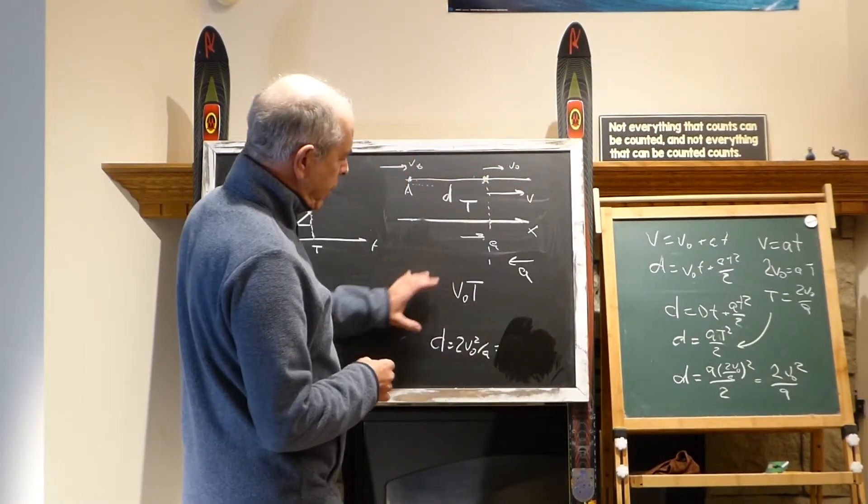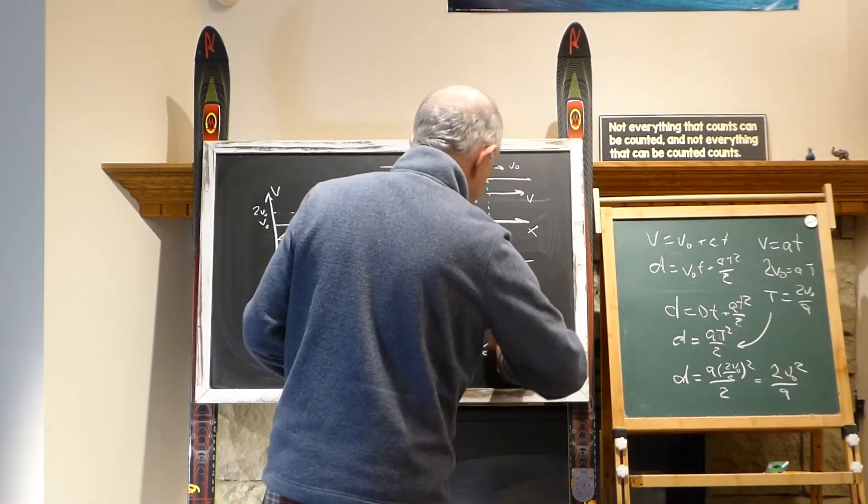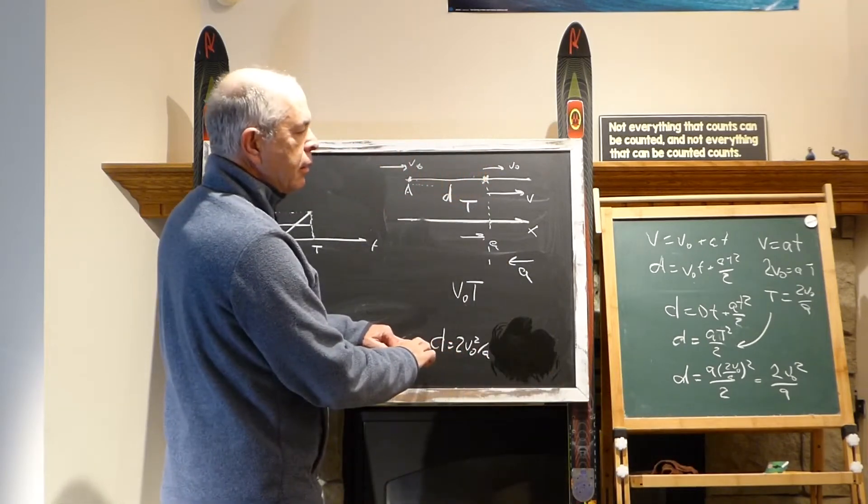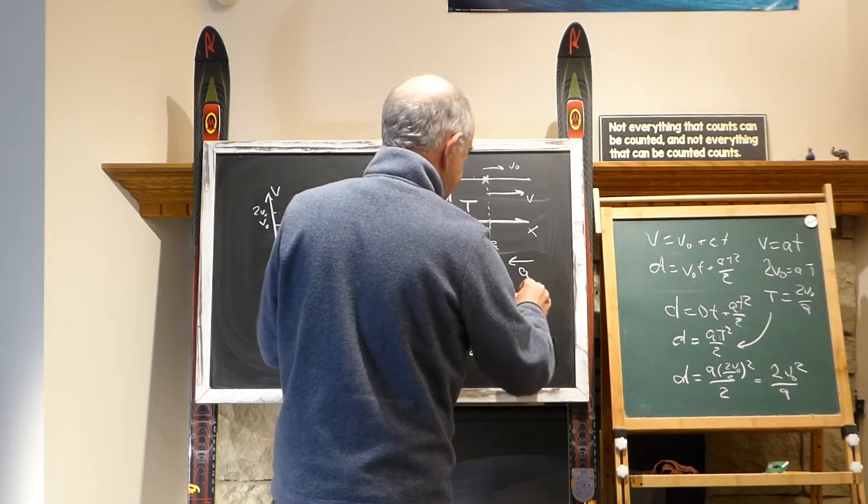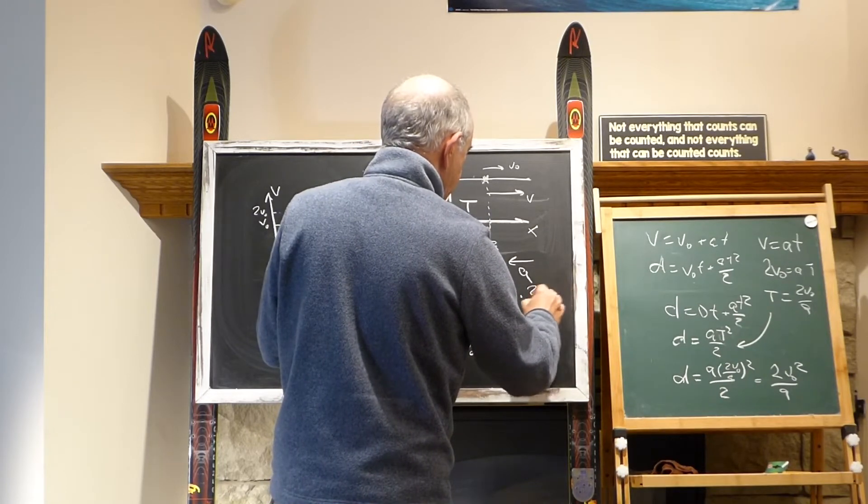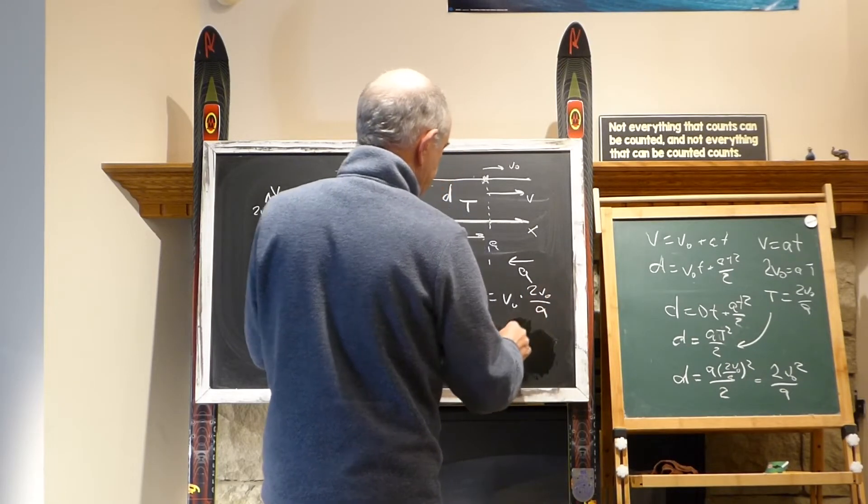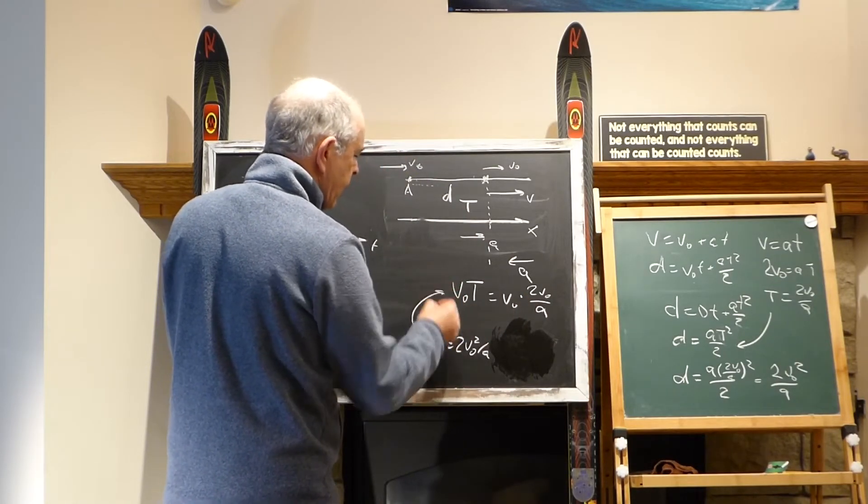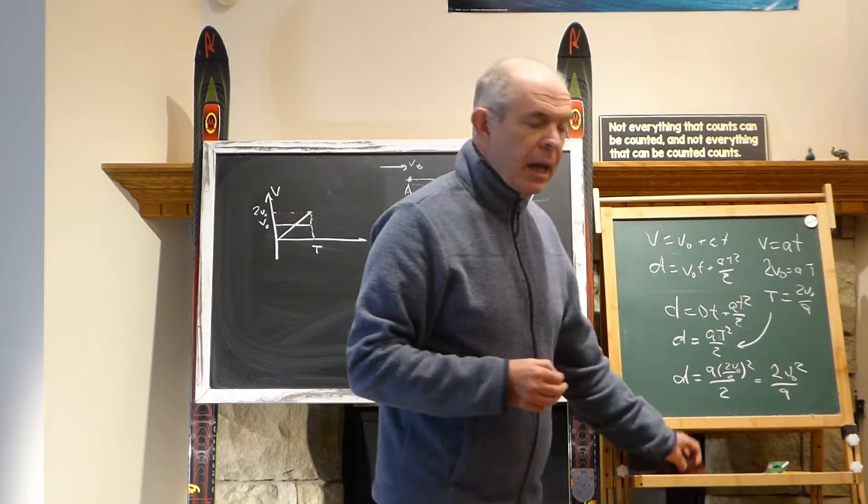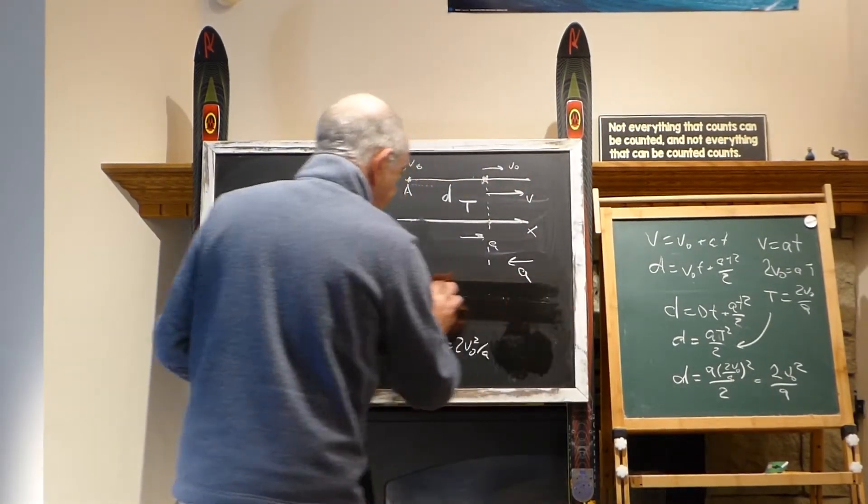Now we have to compare those two. We obtain d, and now we can look at this. v0 and t is 2v0 over a, so we see that those two are exactly the same. Everything matches, it's very nice.